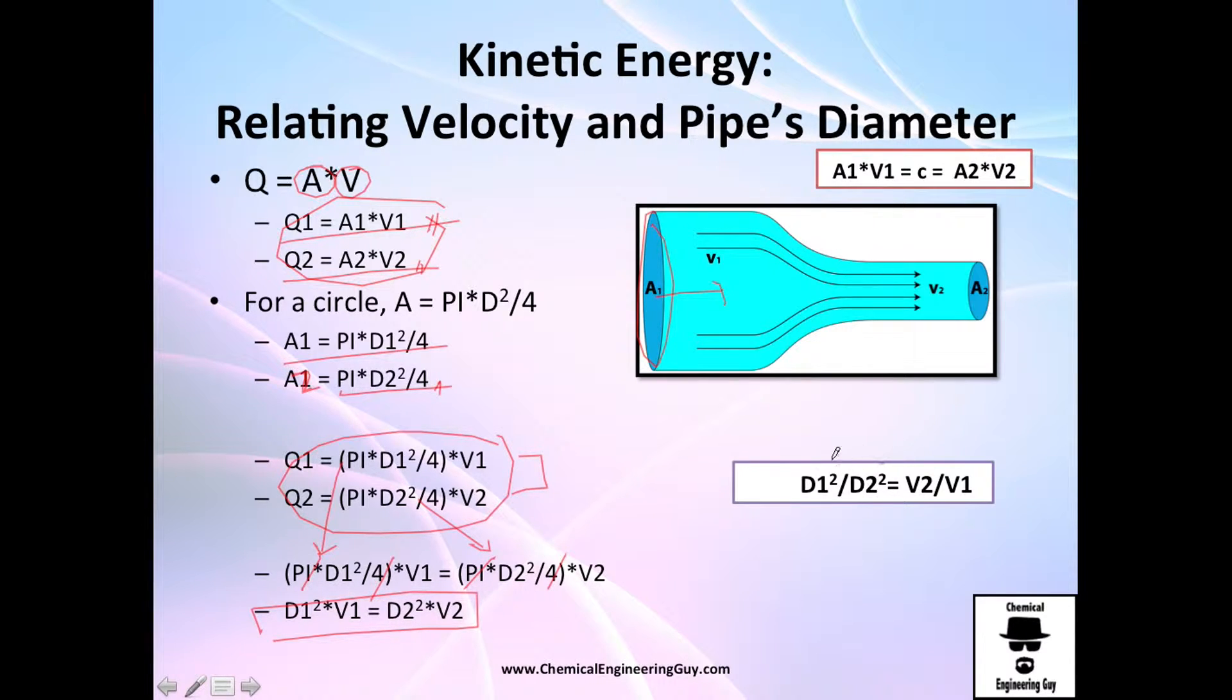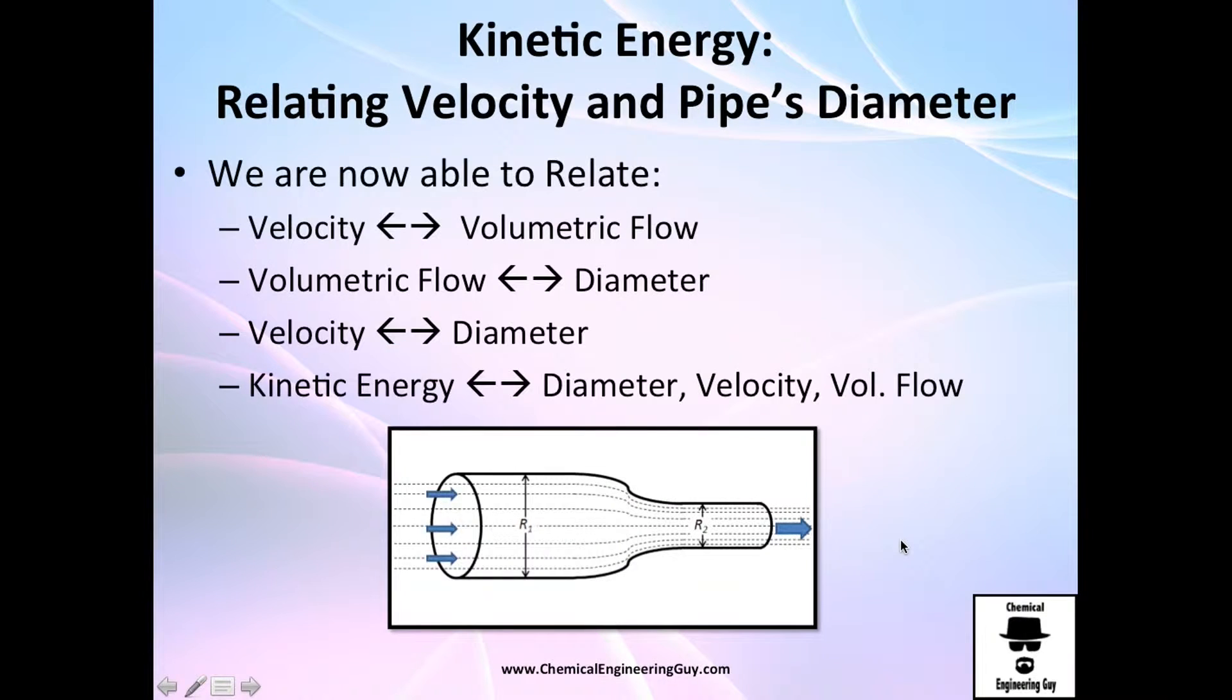We can relate velocity right now with the change on diameters. And a very interesting point right here is that this is squared. So if we want to change the diameter two times, we will change it in velocity speaking four times. So that's very important.